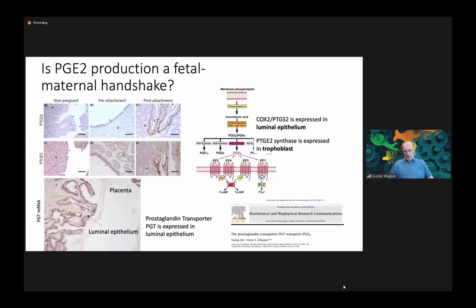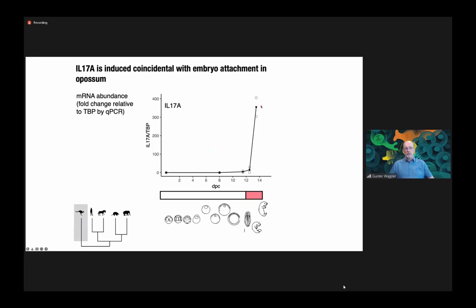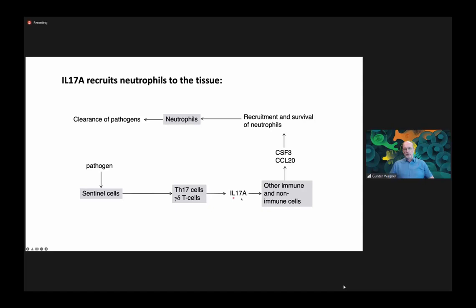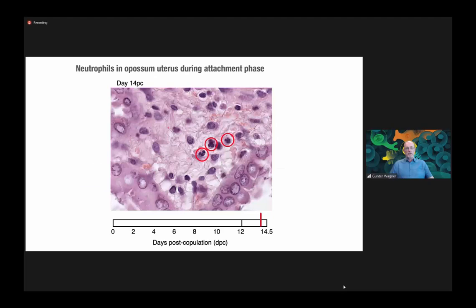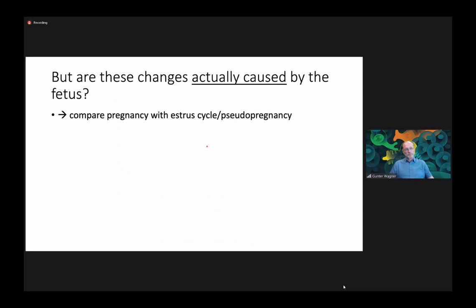Another interesting molecule is the upregulation of interleukin-17A, which is also clearly highly expressed after the attachment of the fetus. IL-17 is one of the signals that activates the recruitment of neutrophils and leads to full inflammatory reactions. And we do see, histologically, neutrophils accumulating in the endometrium of the opossum just before parturition at around day 15.